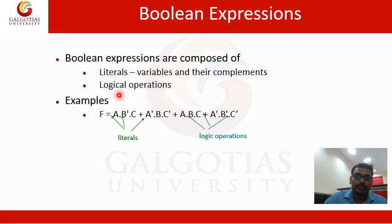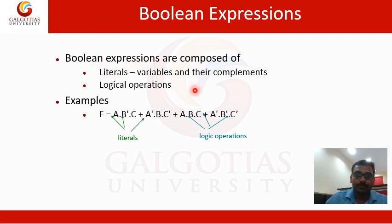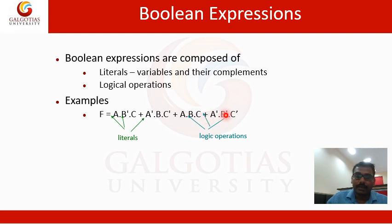The second component of Boolean expressions is logical operations — AND, OR, and NOT — which we have already discussed. In a Boolean expression we will have literals and logical operations. Literals are A, B dash, C, or A dash, B, C dash. The dot indicates the AND of two variables, plus indicates the OR of two variables, and dash indicates the NOT operation.